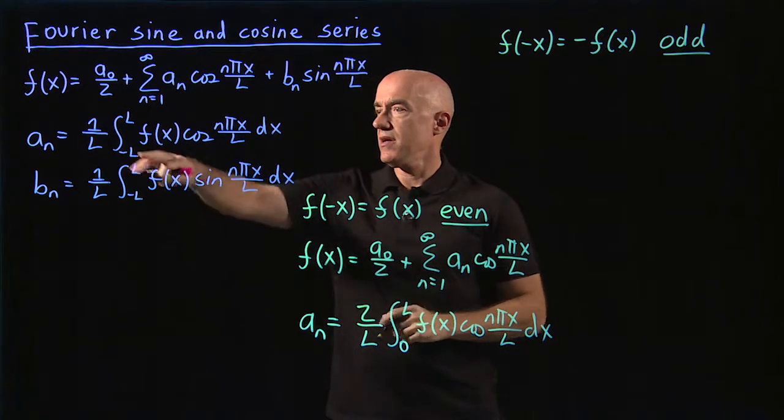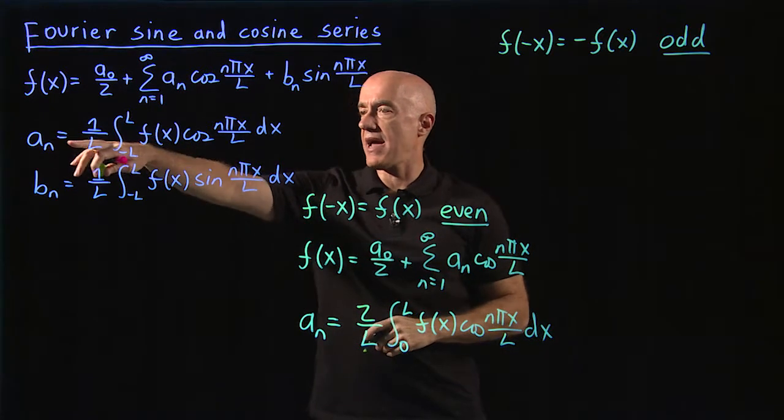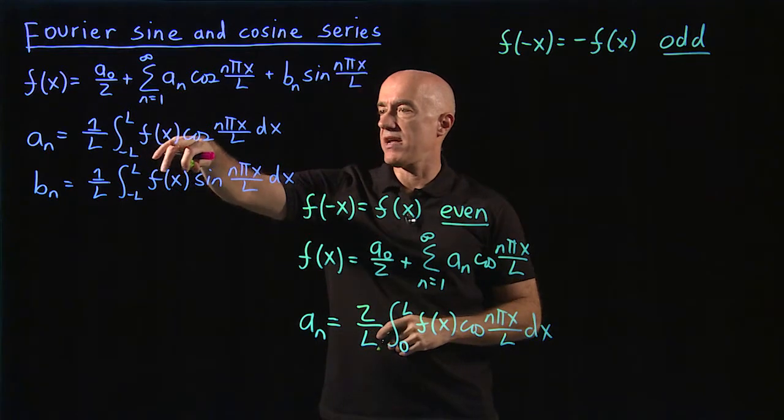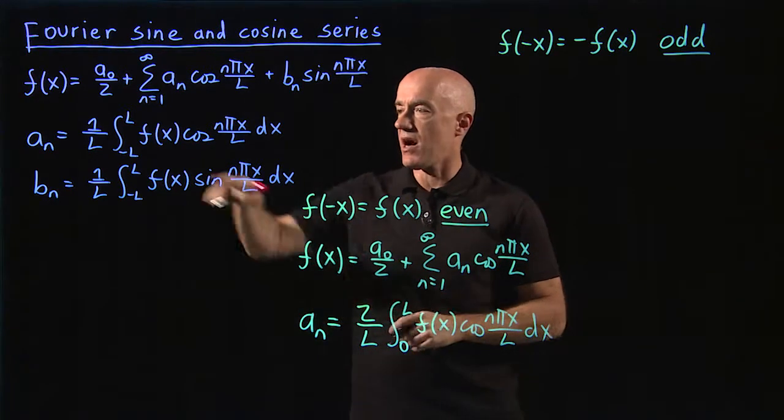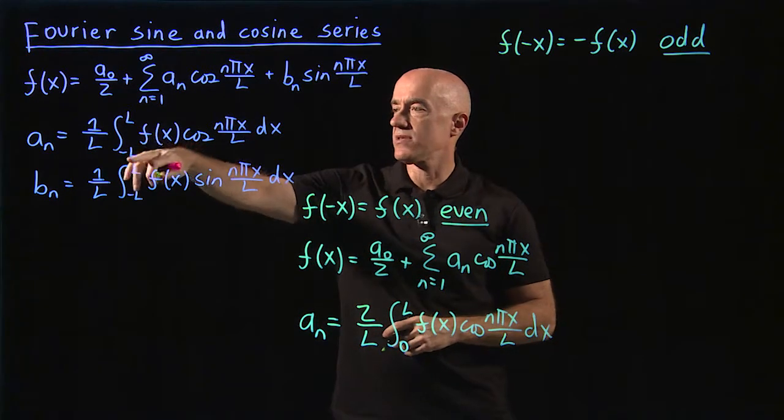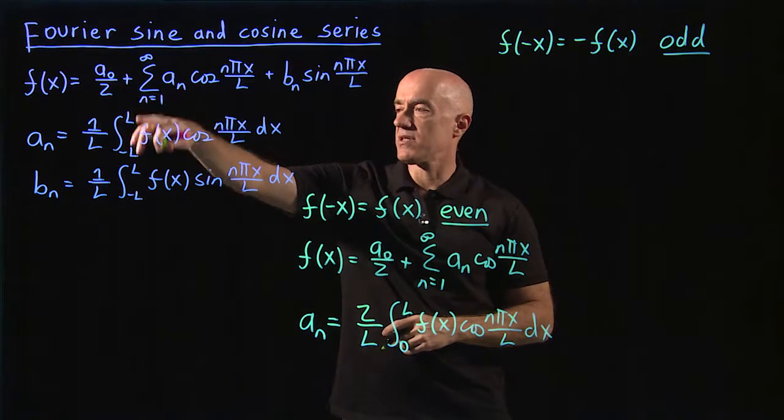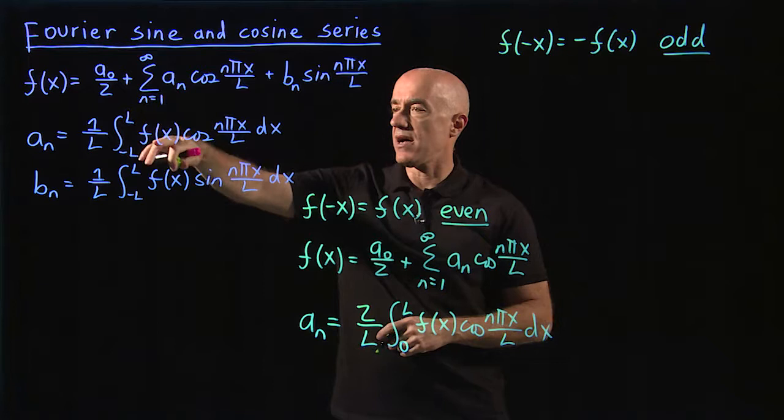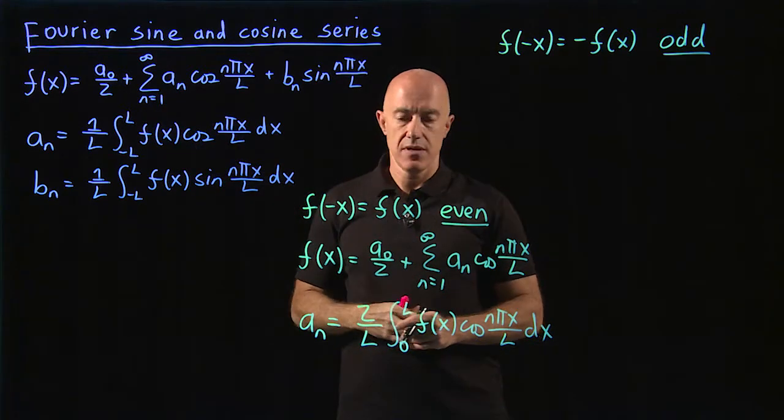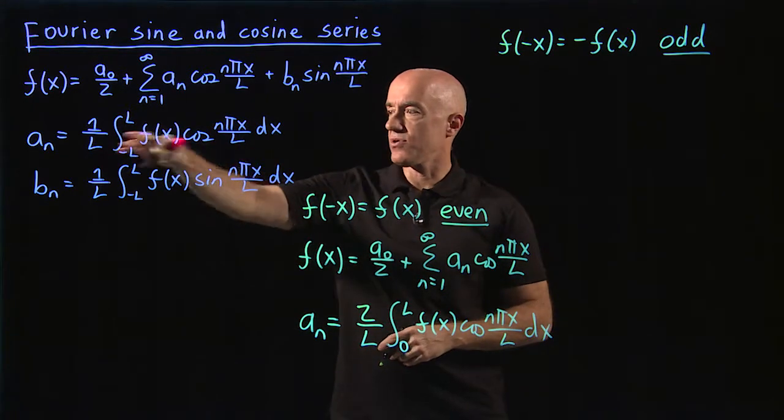So here the a sub n comes from integrating an odd function times an even function. An odd function times an even function is odd. And the integral symmetrically across the y axis here minus L to L will give you 0.